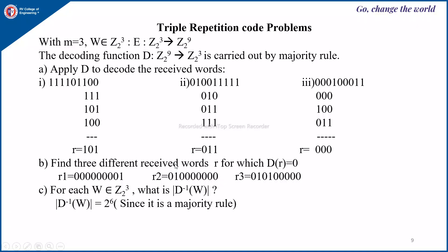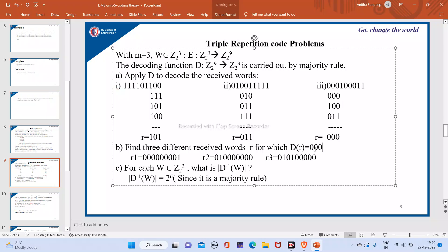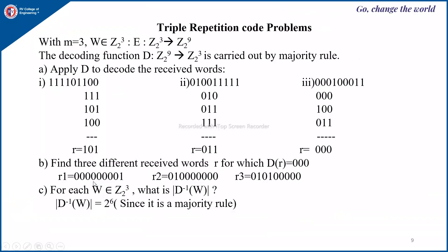Next: find 3 different received words R for which the decryption of R gives 0 0 0. If we want to get 0 0 0 with only 1 bit flip, the flip could be at the least significant bit, at another position, or at a different position. These correspond to 3 valid received words, though many other answers are possible.